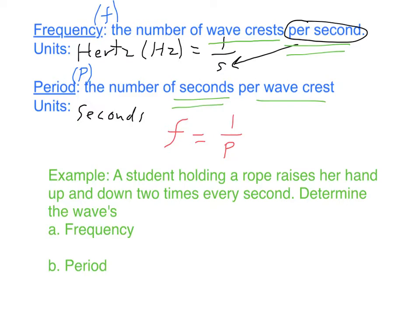Just to make sure that it makes sense as far as the units go, this would be units of 1 over seconds, and 1 over seconds is the definition for Hertz, so that works out. We can also write this another way. If we flip both sides of the equation, we get 1 over frequency equals P.